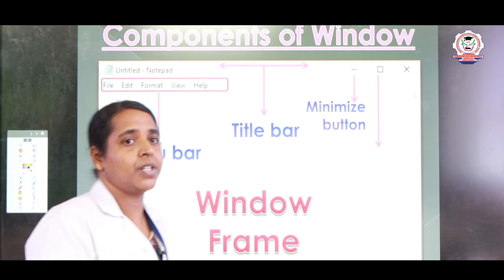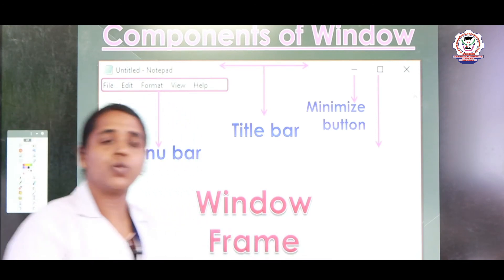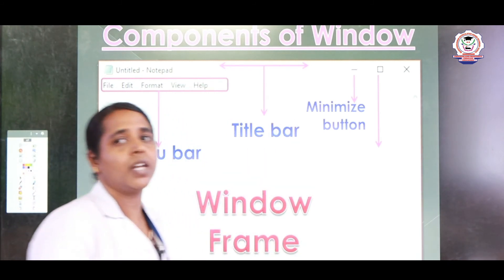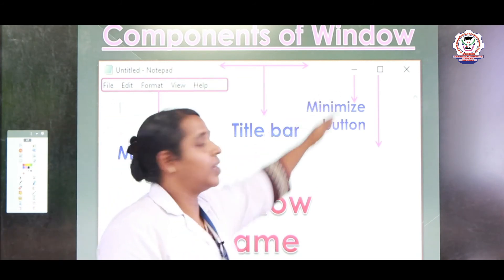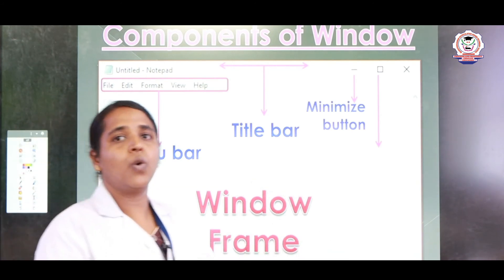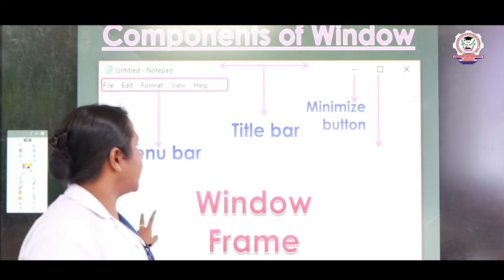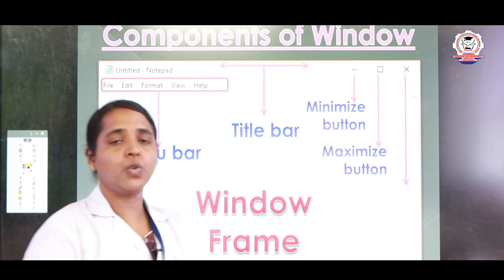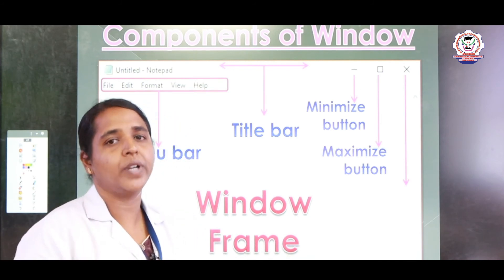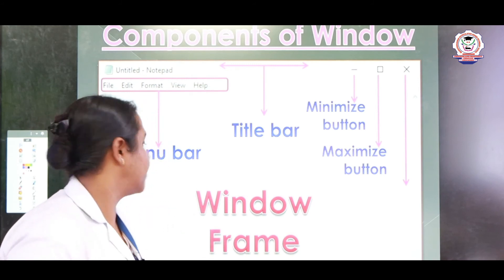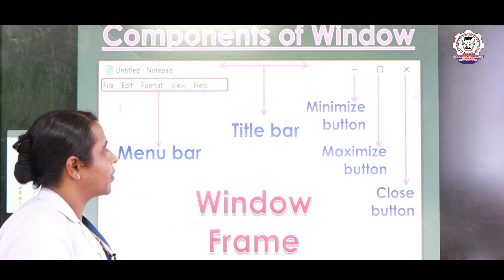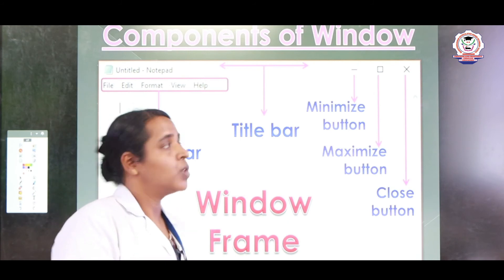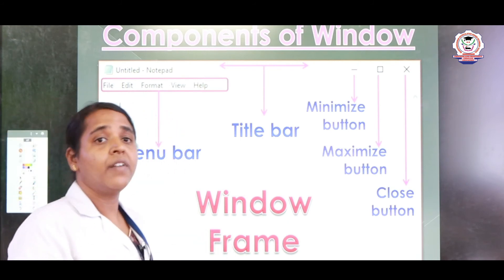Next, the minimizing option. If you are using one application and want to open a new application simultaneously, you just minimize the current application and click to open a new one — it will appear in the taskbar. Next, the maximizing button — if you want to open a minimized window, you click it and it will be maximized. Next, the close button — if you click that cross button, the whole window will close. These are all the components of a window.